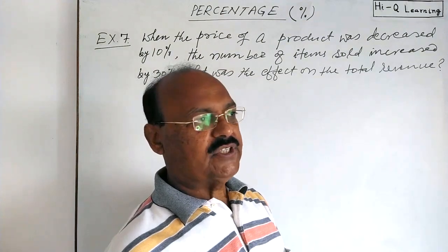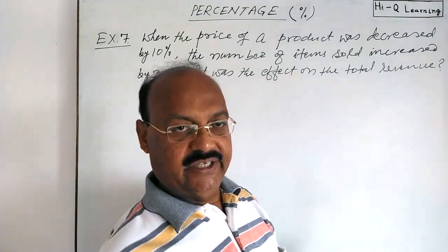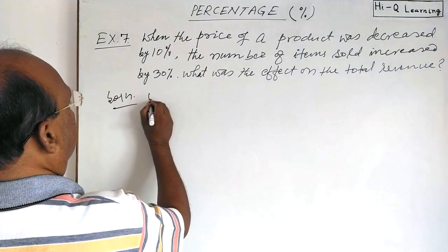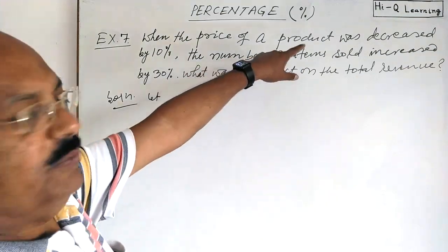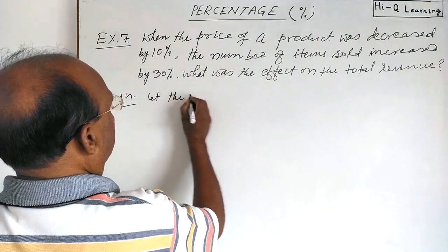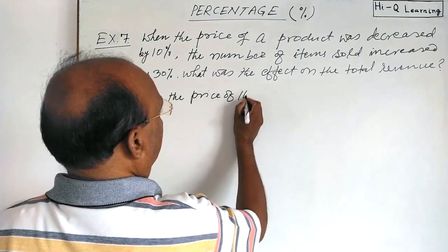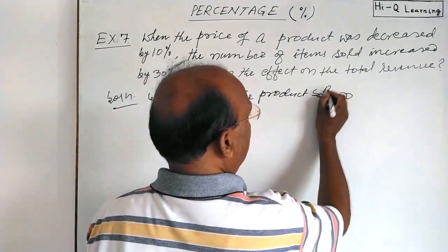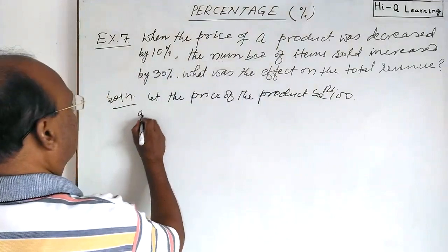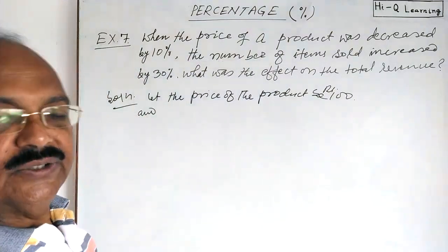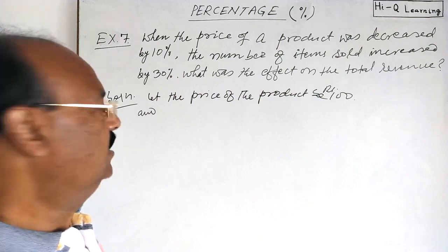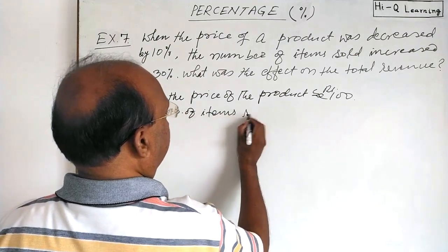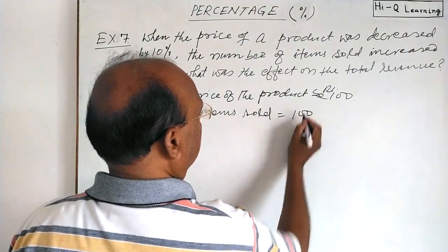As we have discussed in previous videos, if you start your calculation by taking the number hundred, it becomes very simple. So let us suppose that the price of the product is rupees 100, and items sold is also 100. We are assuming this for simplicity.